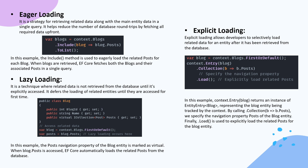Now let's talk about loading strategies. Eager loading is a strategy for retrieving related data along with the main entity data in a single query. It helps reduce the number of database round trips by fetching all required data upfront. For example, you retrieve blogs data and include the blog posts as well. The Include method is used to eagerly load the related posts for each blog, so EF Core fetches both the blogs and their associated posts in a single query.